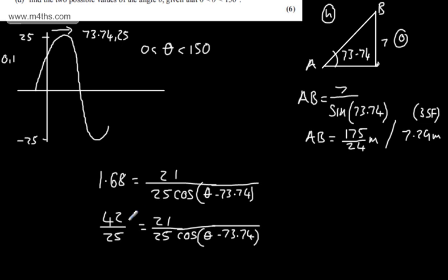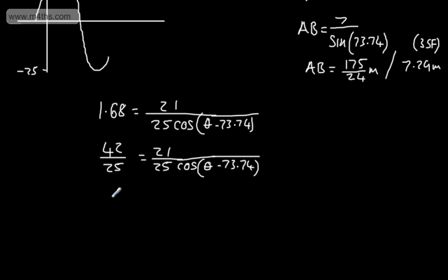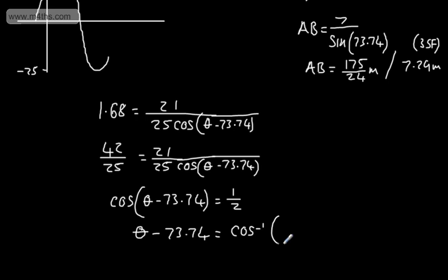So we can divide both sides of this equation by 21 over 25, and just rewriting that, if we just rearrange, we can actually write this as cos of theta minus 73.74 is going to be equal to 0.5. This is going to give me a special angle, and we can say that theta minus 73.74 is going to be equal to the inverse cosine of 0.5.